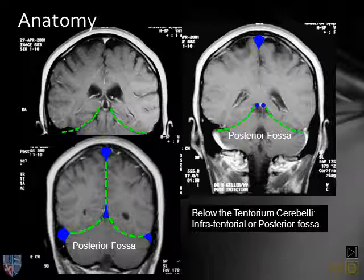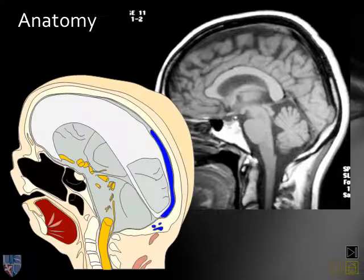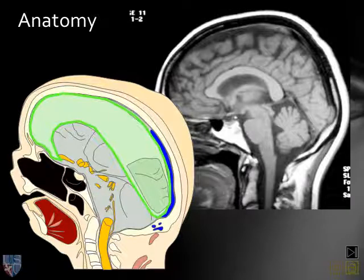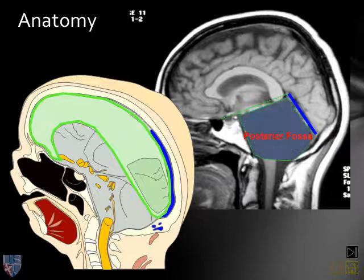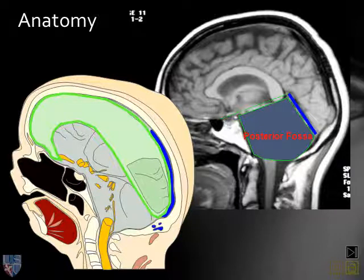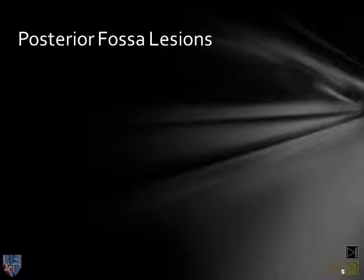If we look at this sagittal MR section and this sagittal drawing, we can see how the falx cerebri separates the two cerebral hemispheres, and we can see on the sagittal MR the straight sinus. We can imagine a dotted line indicating the attachment of the tentorium at the anterior margin of the straight sinus going forwards to attach to the anterior clinoid process. The posterior fossa is the volume of the brain below the tentorium, anterior to the straight sinus and posterior to the clivus. There are several different sublocations for posterior fossa lesions.